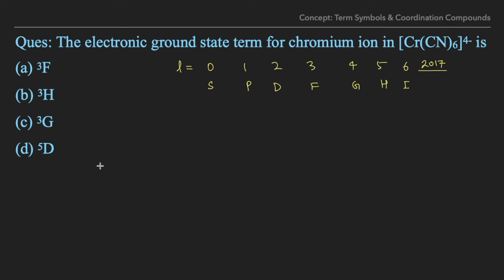Looking at the complex Cr(CN)₆⁴⁻, if you solve for the oxidation state you get chromium in +2 oxidation state, which means it is a d⁴ system. Considering the ligand CN⁻, which is a strong field donor ligand, we know this is going to form a low-spin complex.